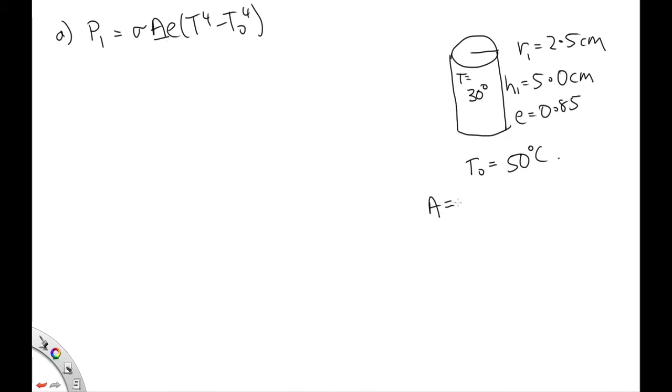This is a cylinder, so it's got two circular ends with the surface area pi R squared, and then it's got this rectangular piece here, which is the circumference of a circle times H. So substituting in, we've got 2 pi times 0.025 squared plus 2 pi times 0.025 times 0.05. Solving that on the calculator, you end up with 0.01178 meters squared as the surface area.